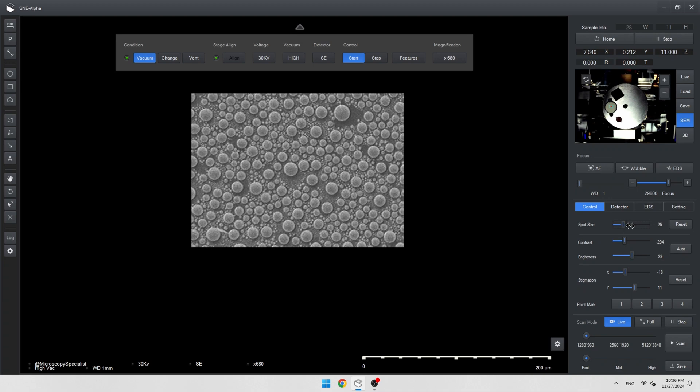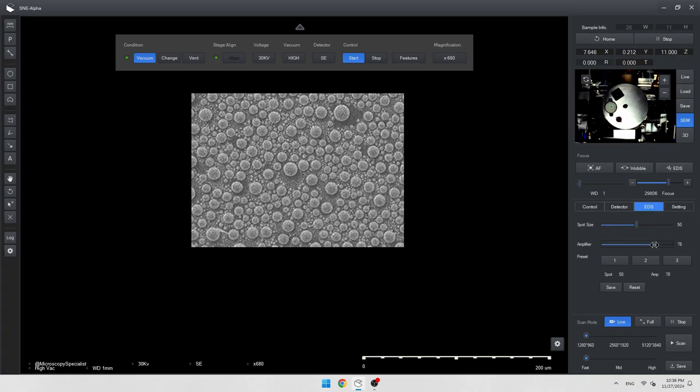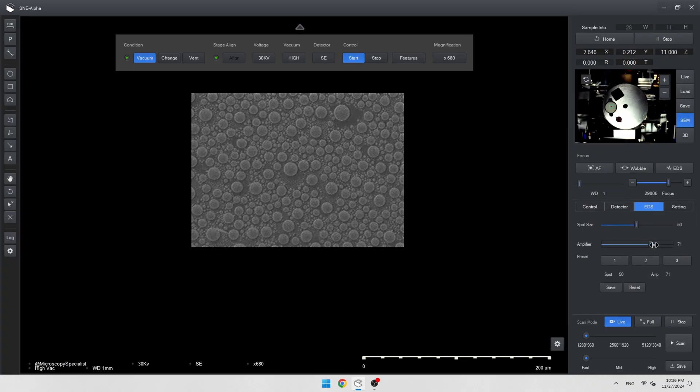So if I want to increase the spot size, I should shift this slider left. Signal will be higher and image will be brighter. We also should check the gain of the detector and secondary electron collect settings. For this microscope gain about 70 is the best choice.